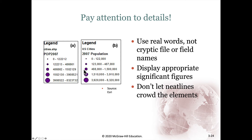When putting your map together, pay attention to the detail. This would be an example of a poor legend. We still have the name of the shapefile for what the layer is, which is never good form. And this is the attribute from the attribute table that we're mapping — the population for 2007. Also, these values end up in really weird numbers like 122,212, which is just hard to read and not easy to decipher. But this better legend over here, instead of using the name of the shapefile, has changed it to 'US Cities.' Instead of using the name of the attribute, it's changed to '2007 Population.' And the categories are all nice round numbers ending in three zeros, so the map user is able to use this in a more intuitive fashion.